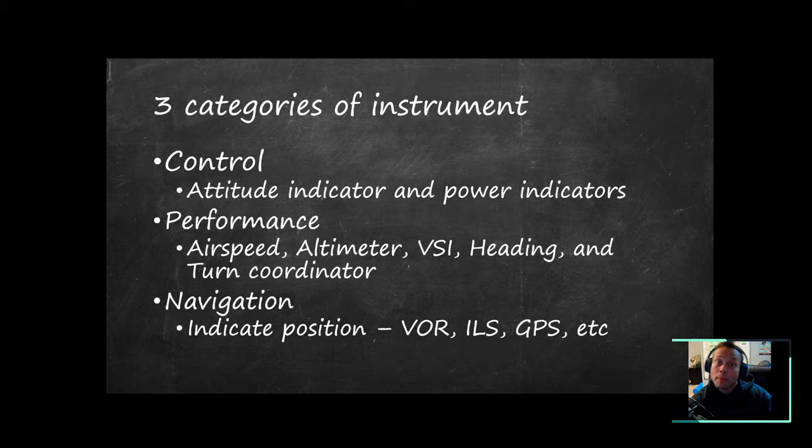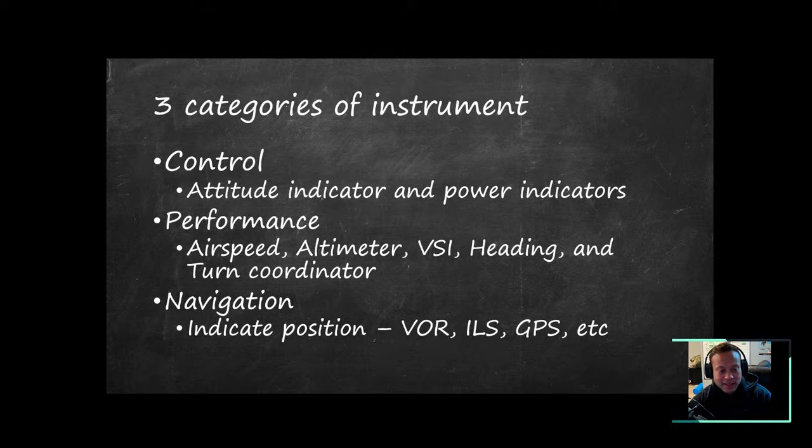We use performance instruments — the airspeed indicator, altimeter, vertical speed indicator, heading and turn coordinator — to gauge our performance, to see if what we put into the aircraft is doing what we want. And finally there are navigation instruments, which indicate our position in three-dimensional space: VOR, ILS, GPS. We'll talk about those more later, but today we're focusing on control and performance instruments.